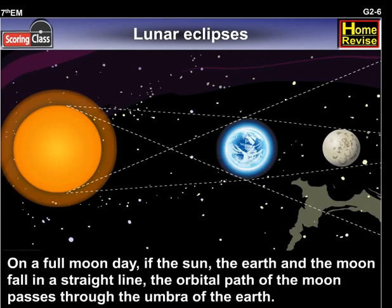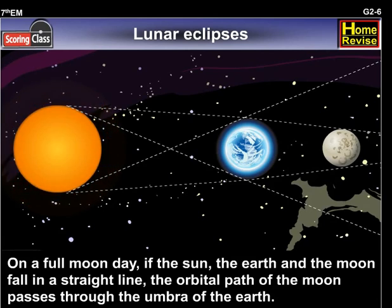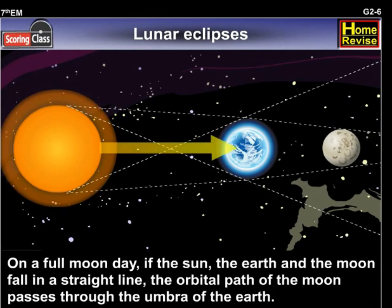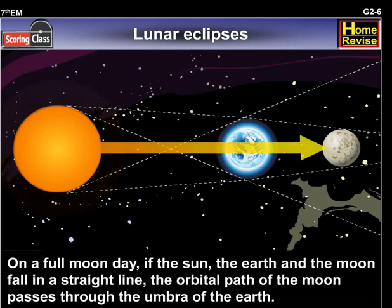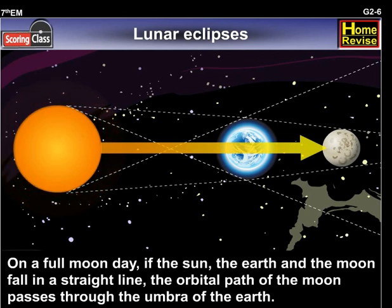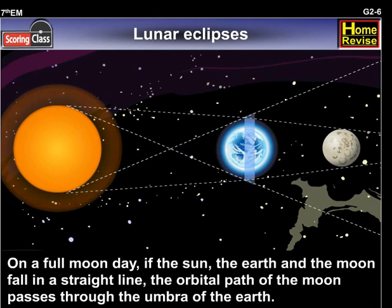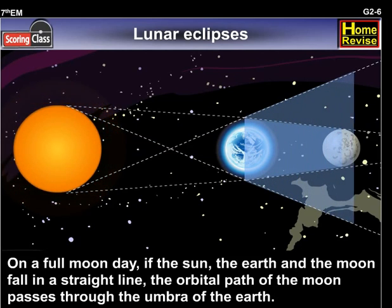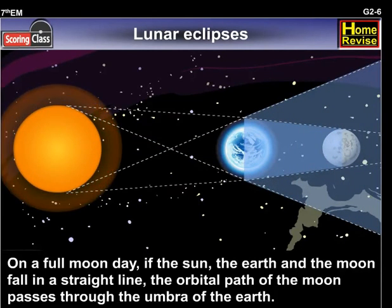On a full moon day, if the sun, the earth and the moon fall in a straight line, the orbital path of the moon passes through the umbra of the earth.